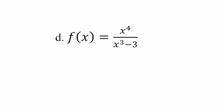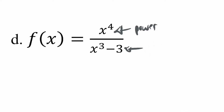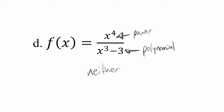Next example: this one is a quotient, and neither power functions nor polynomial functions technically allow quotients. The top on its own would be a power function, and the bottom on its own would be a polynomial function, but the quotient does not qualify as either. So in this case, we'll say neither. There is a term for this, but we haven't gotten to that kind of function yet — we'll get to that in a later module.